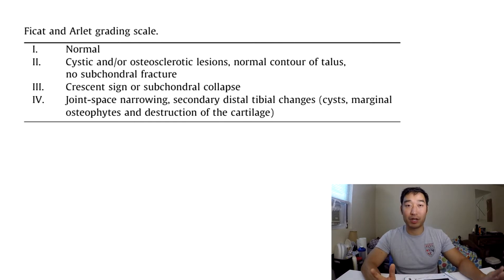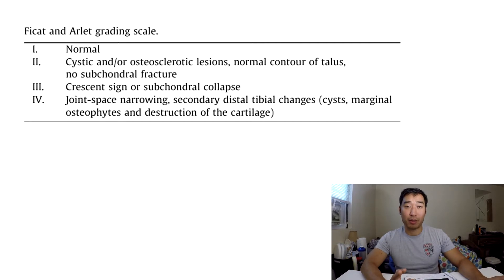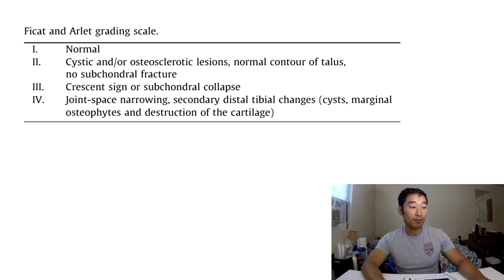So what are some ways to treat talar avascular necrosis? Just like other conditions, there are conservative and surgical options — joint-sparing or joint-sacrificing. One conservative approach is non-weight bearing, just taking the load off and seeing if the bone heals on its own. Some articles describe patients going non-weight bearing for nine months, and despite that, the results are not even that good. In fact, one-third of conservatively treated patients end up needing surgery anyway.